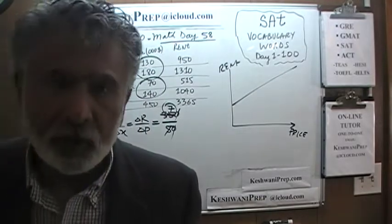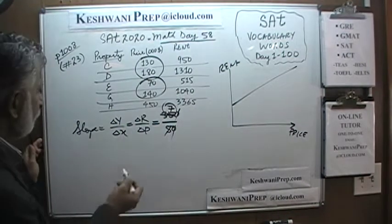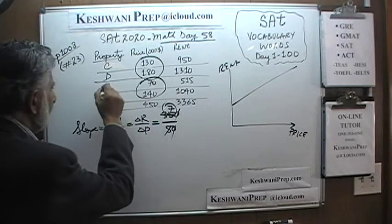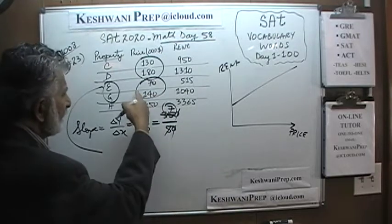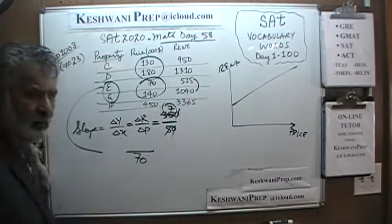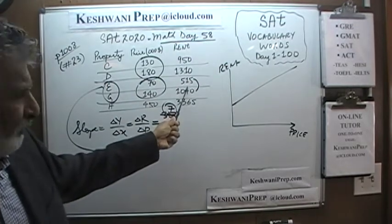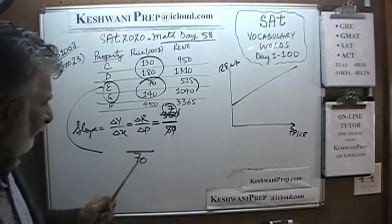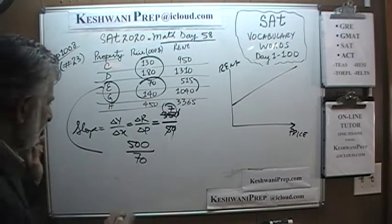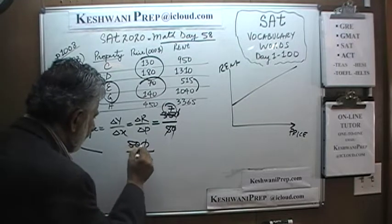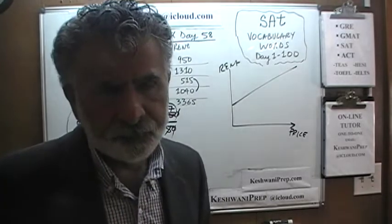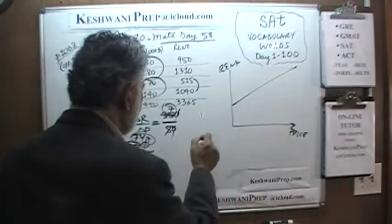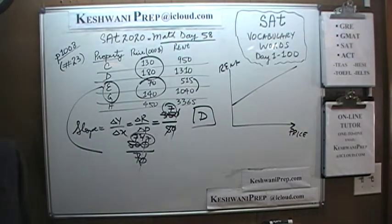Using properties E and G, the change in price is 70 and the change in rent goes from 1040 to about 515 — I used 500 to keep the math simple. So 500 divided by 70: 49 would have been 7, so it's 7 and one-seventh. The slope is more than 7. If the slope is more than 7, the answer is D.